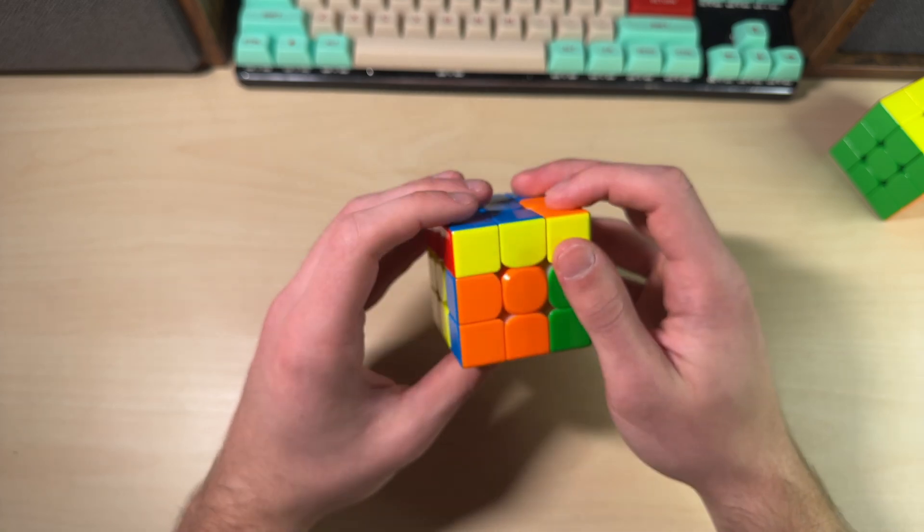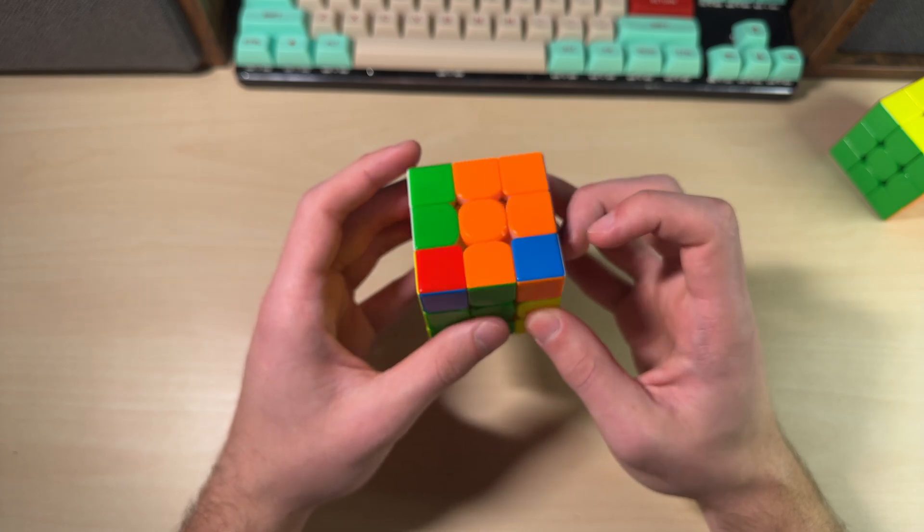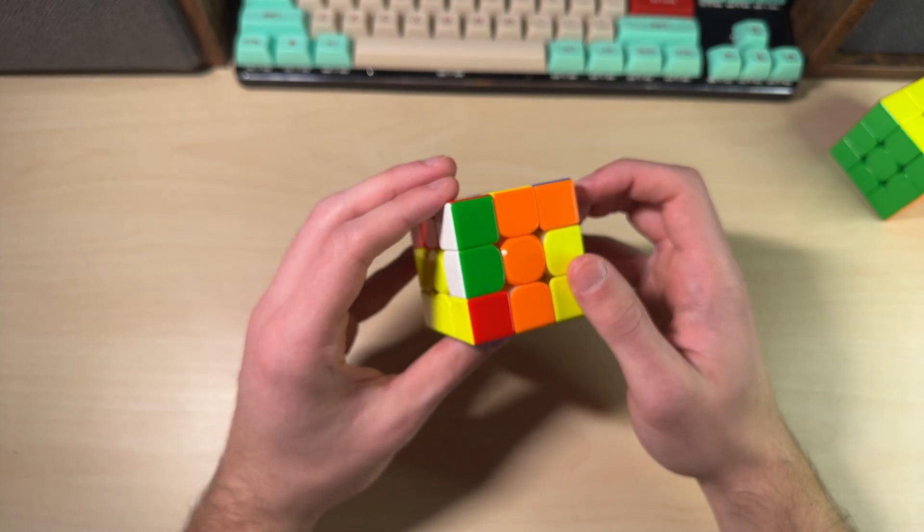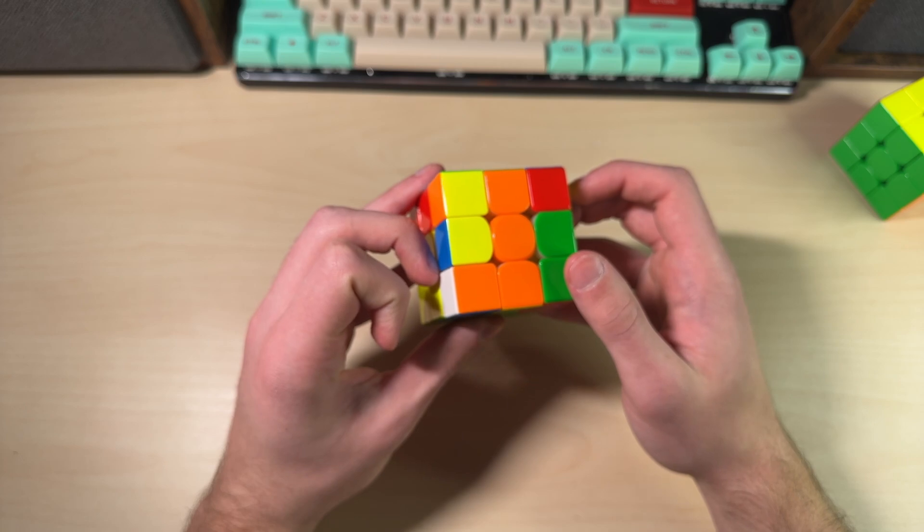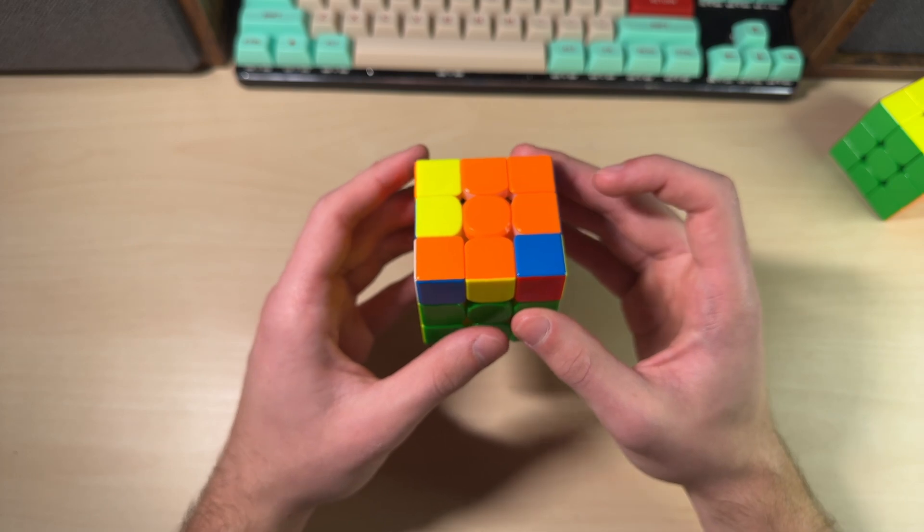So you start your SUNE with the pinch U there. Do the next U with your middle finger. R U2 with the lefty double flick. And then your middle finger should be in a pretty good position to the next U move.